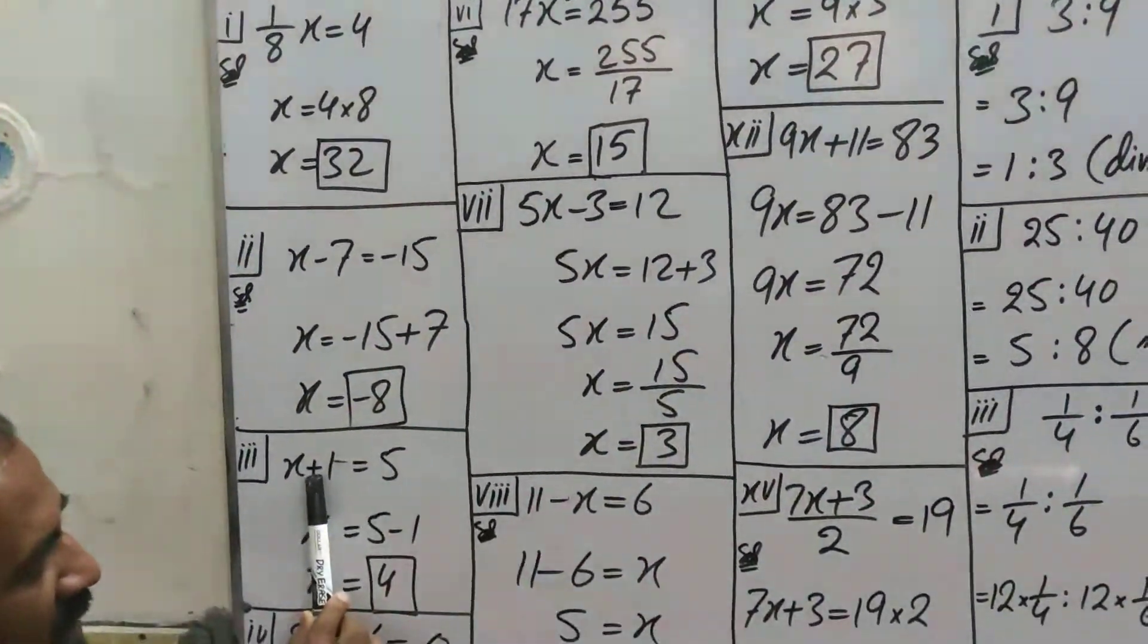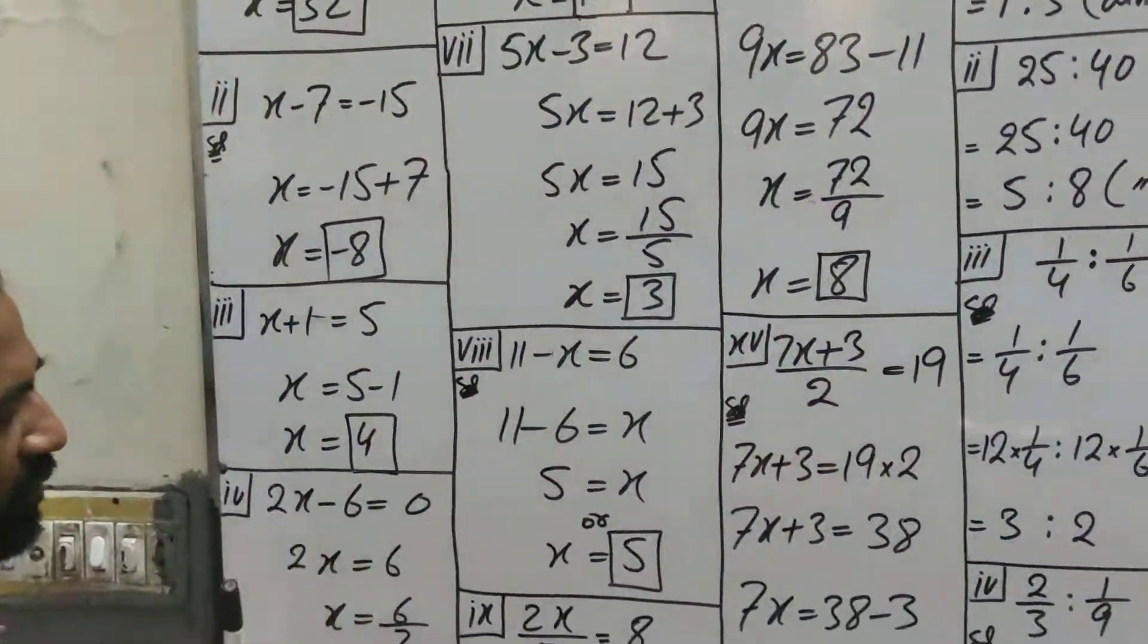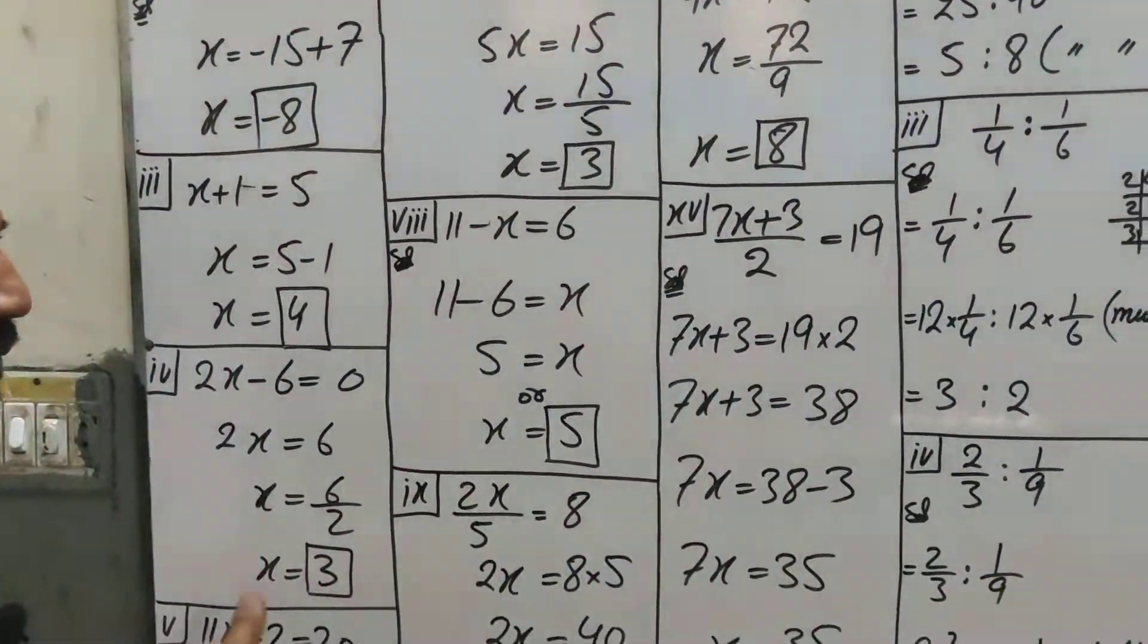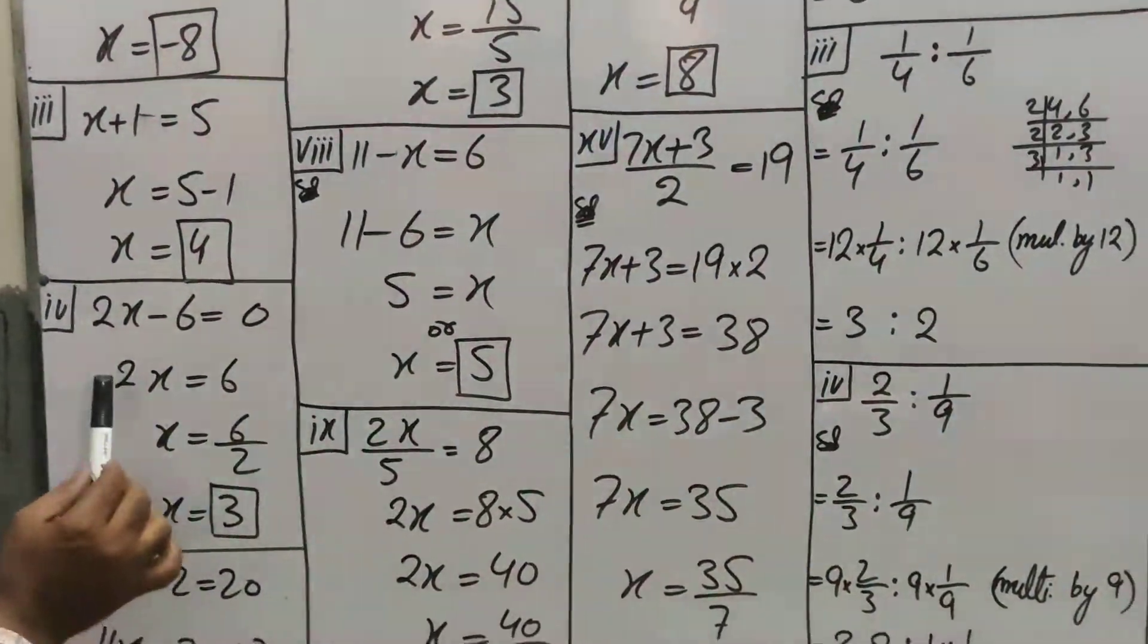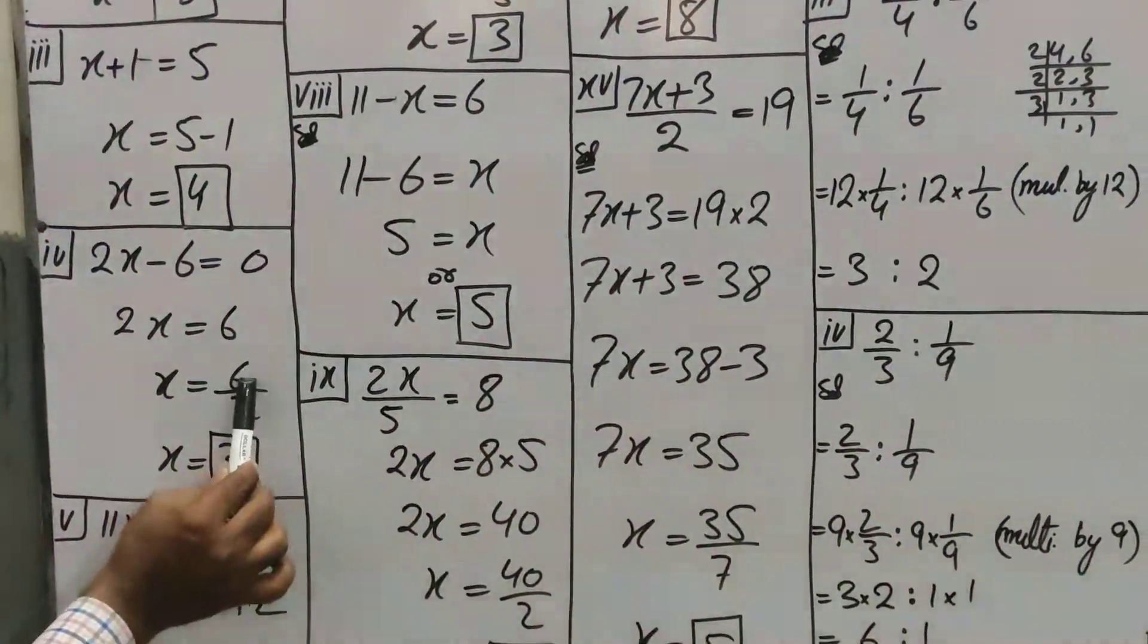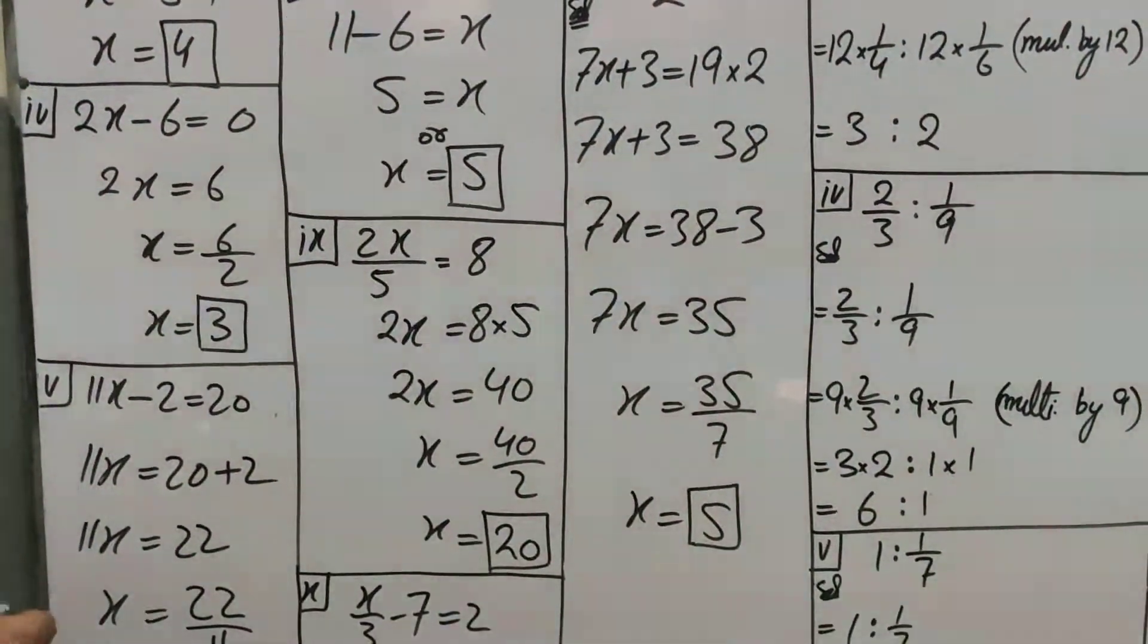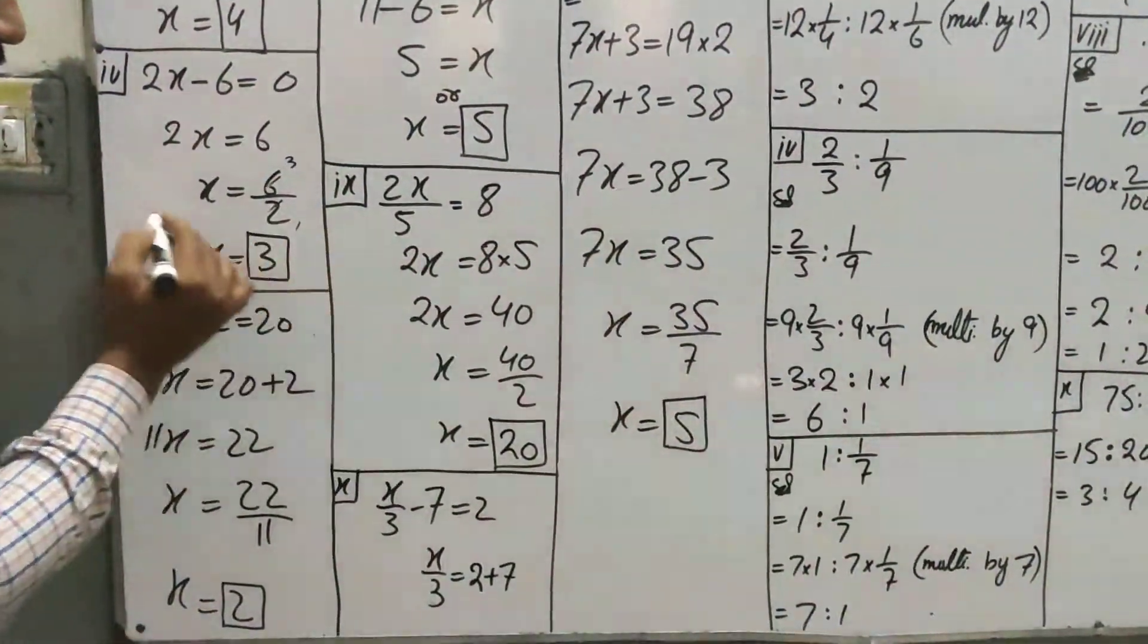Take another question. x + 1 = 5, plus 1 minus 1, this will be 4. 5 - 1 is 4. This minus 6 will be plus 6. So when you do 0 + 6, then the answer will be 6. 2 here and divide, we will cut 2. So 3 answer will be.